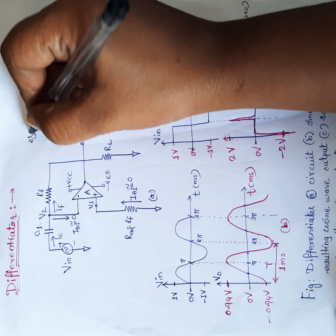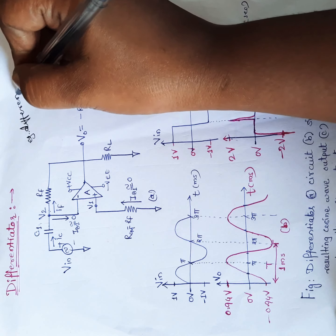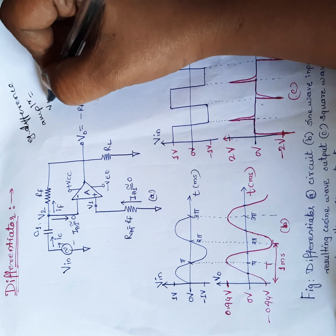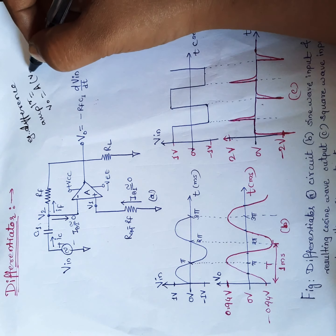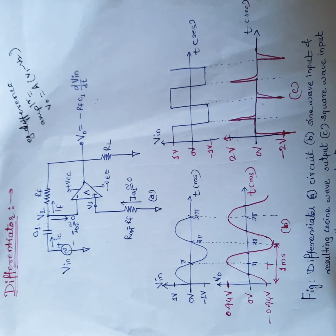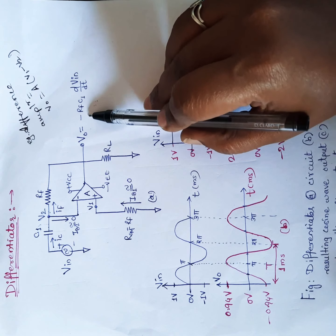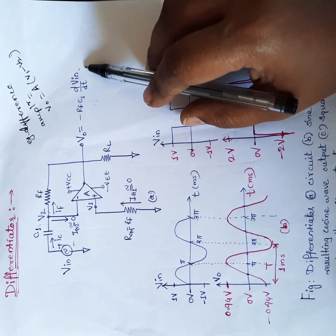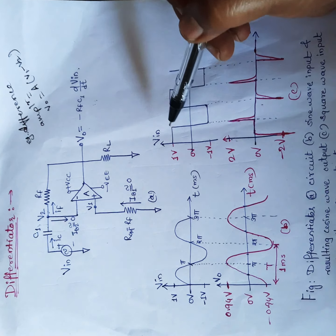For the difference amplifier, the output v0 is the gain A multiplied by the difference between the two input signals. Whereas in the differentiator, the output is the differential of the input signal.